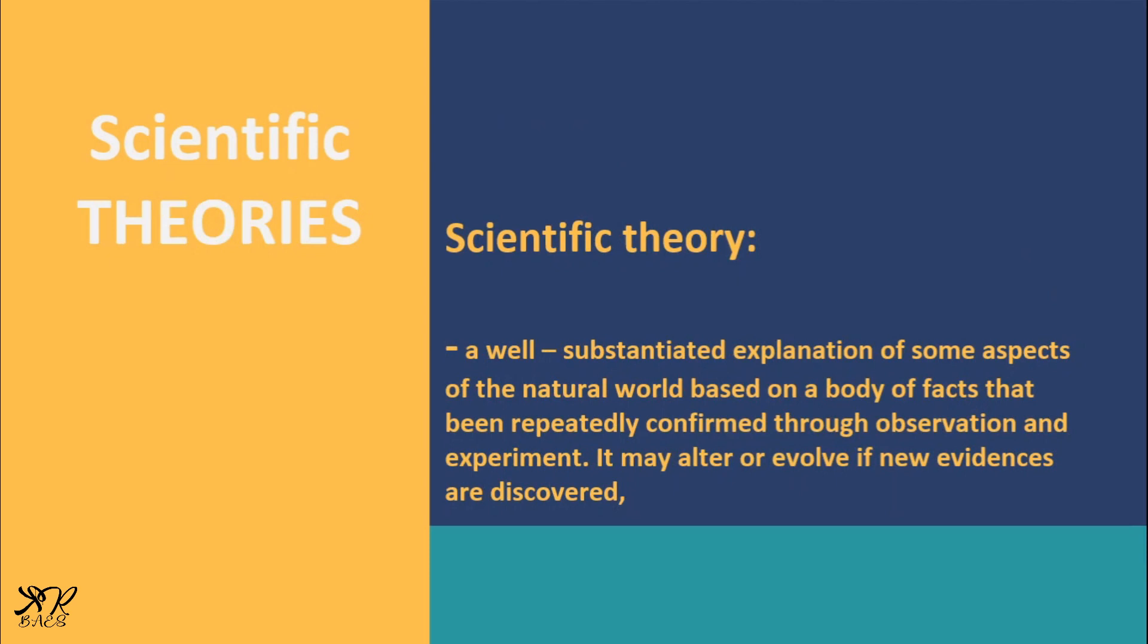Laws are different from theories. According to the American Association for the Advancement in Science, a scientific theory is a well-substantiated explanation of some aspects of the natural world based on a body of facts that have been repeatedly confirmed through observation and experiment. Scientific theory may alter or evolve if new evidences are discovered.